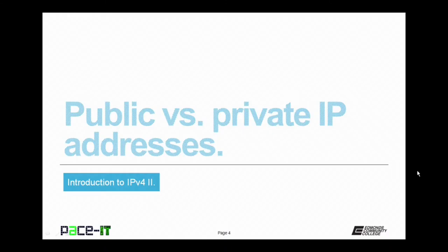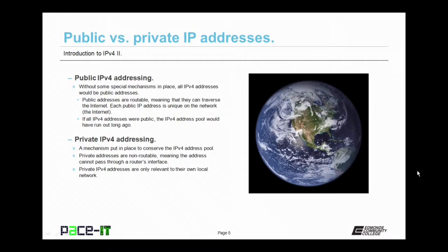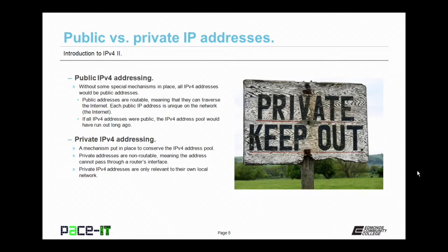Let's start by discussing some of the differences between public and private IP addresses. Because of its structure, IPv4 gives us over 4 billion possible addresses, and all IPv4 addresses need to be unique on their network. Without some special mechanisms in place, all IPv4 addresses would be public addresses. Public addresses are routable, meaning they can traverse the internet, and each public IP address is unique on the internet. If all IPv4 addresses were public, the IPv4 address pool would have run out long ago, so they developed special mechanisms to help conserve that pool.